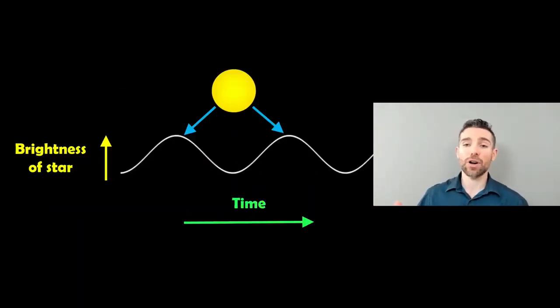When the star spots have gone behind the star and we can no longer see them from our point of view, then the star will appear at its brightest because there's no darker regions on the star facing us. It's going to appear at its brightest at that location there.